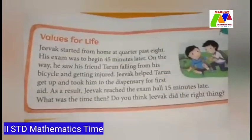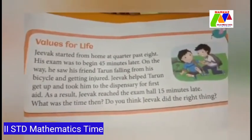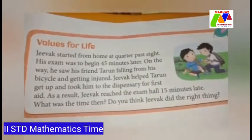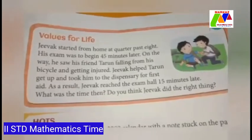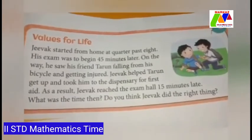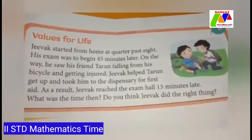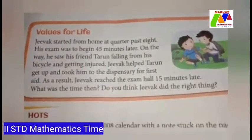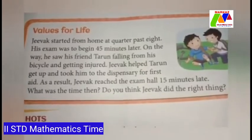Next, let's take values for life. Jeeval started from home at quarter past 8. His exam was to begin 45 minutes later. On the way, he saw his friend Tarun falling from his bicycle and getting injured. Jeeval helped Tarun get up and took him to the dispensary for first aid. As a result, Jeeval reached the exam 15 minutes late. Jeeval reached at 9:50. He did the right thing by helping his friend.